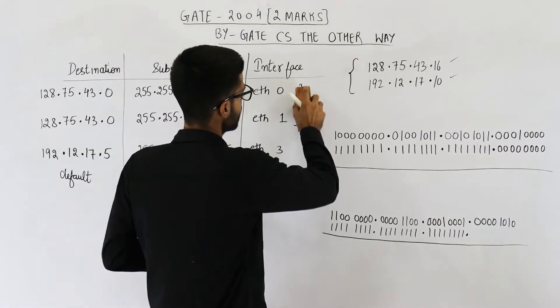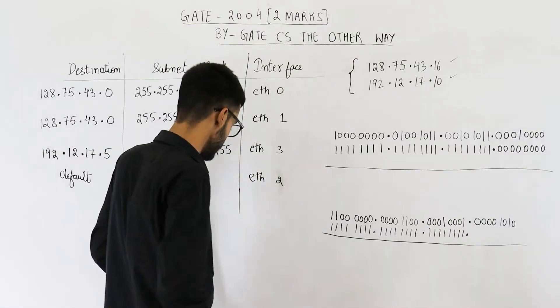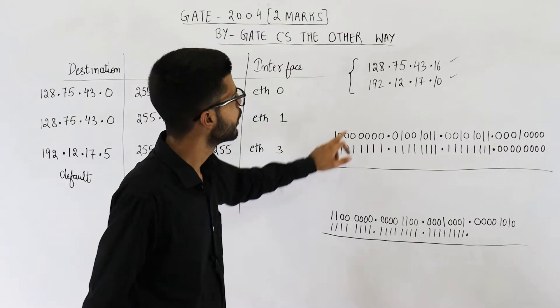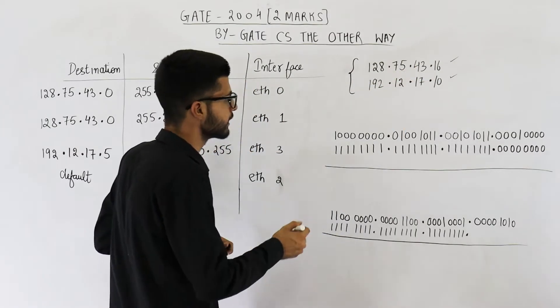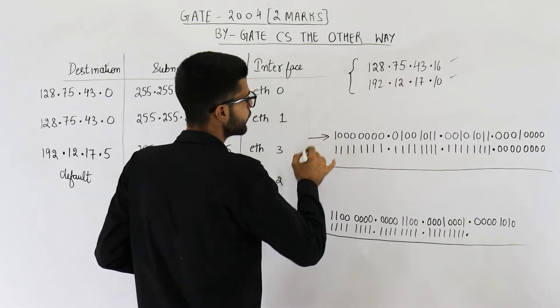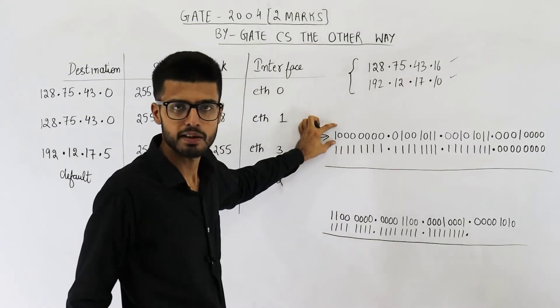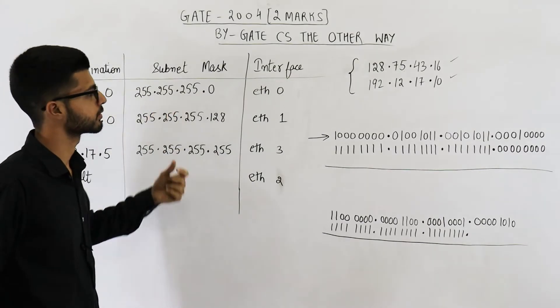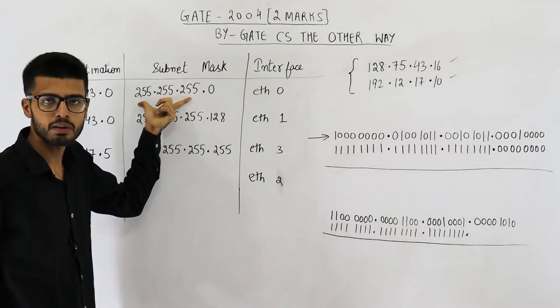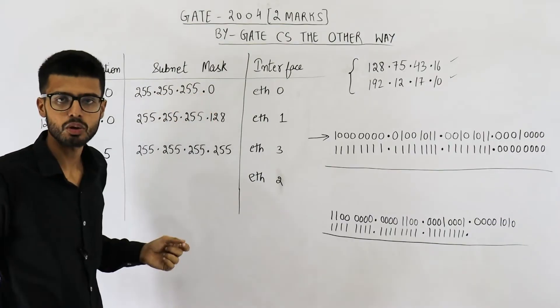Now let us analyze the first packet. IP address for first packet is 128.75.43.16. I have converted it to binary here. So this is the given IP address. Let us perform AND with this subnet mask.